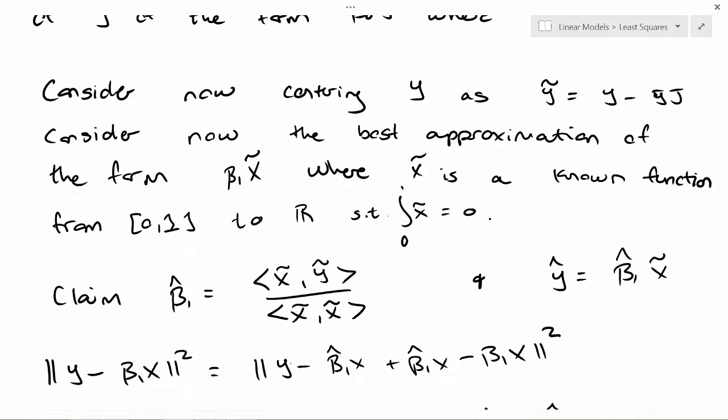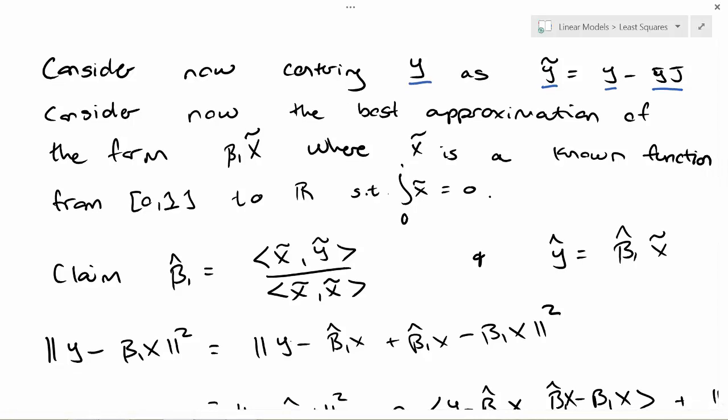Let's extend this. Now let's consider centering y as y tilde, which is y minus y bar times this j function, the constant function. Now let's find the best approximation of the form beta_1 x tilde, where x tilde is a known function from [0,1] to R in our space L^2, such that the integral of x tilde is 0.